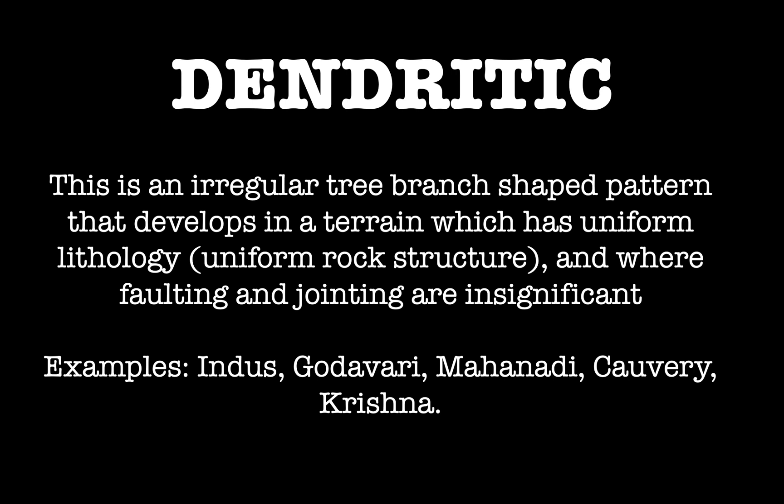Coming back to drainage patterns — there can be many types, and it is important we understand the technical ones by breaking down the terminologies. First is the dendritic type of drainage pattern. The word dendritic originated from the Greek word 'dendron,' which means tree-shaped. Dendron is also a place in South Africa. So dendritic signifies a river pattern in the form of branches of a tree.